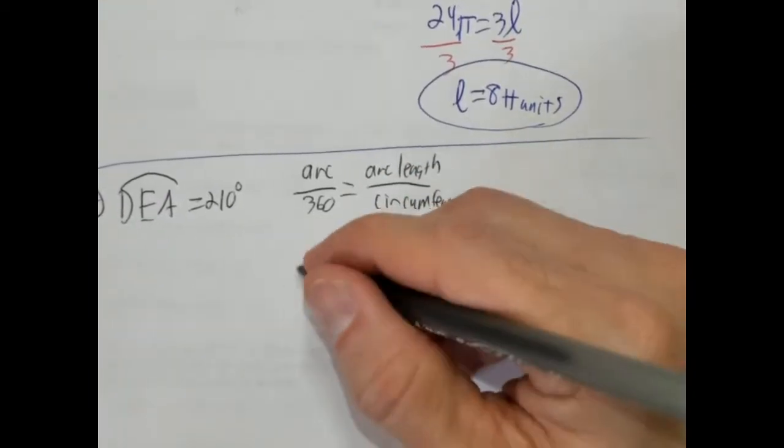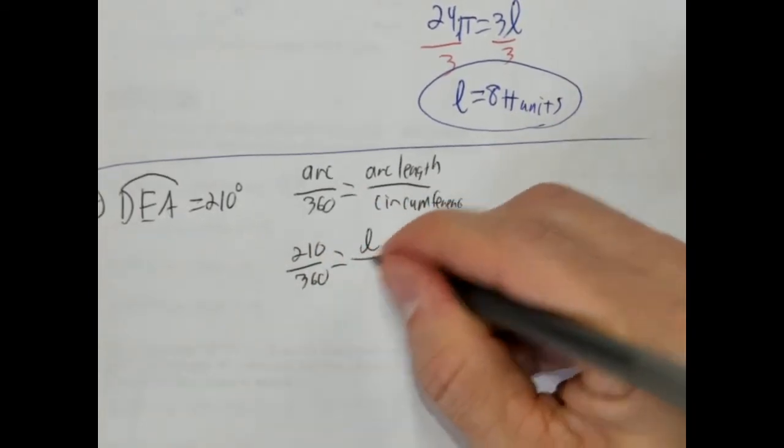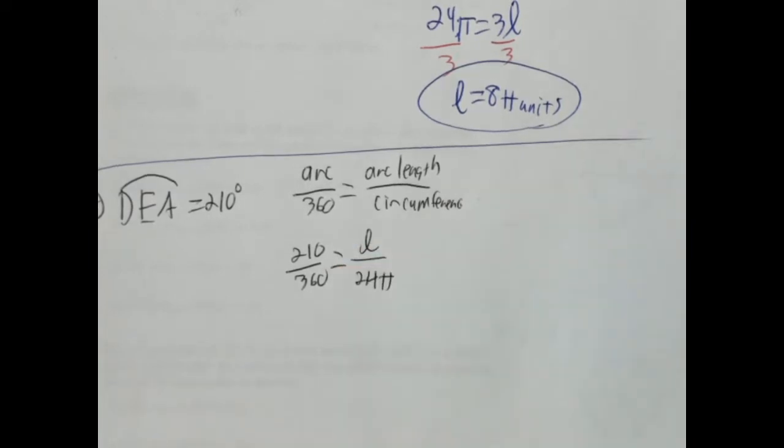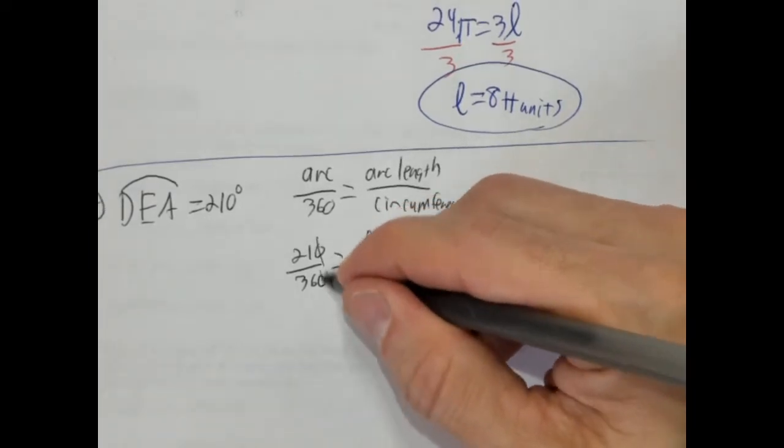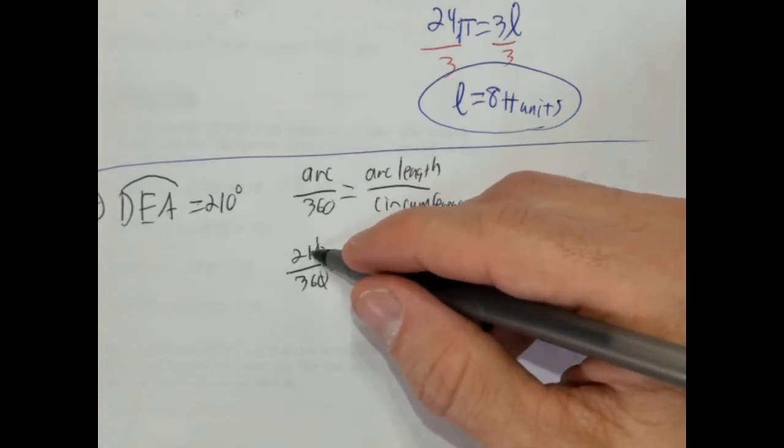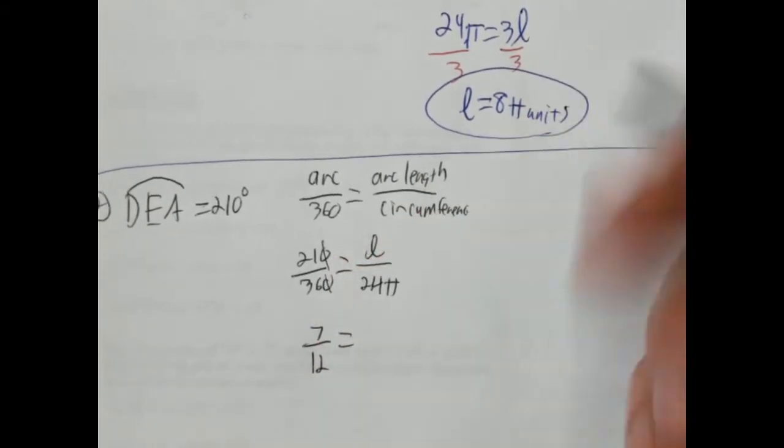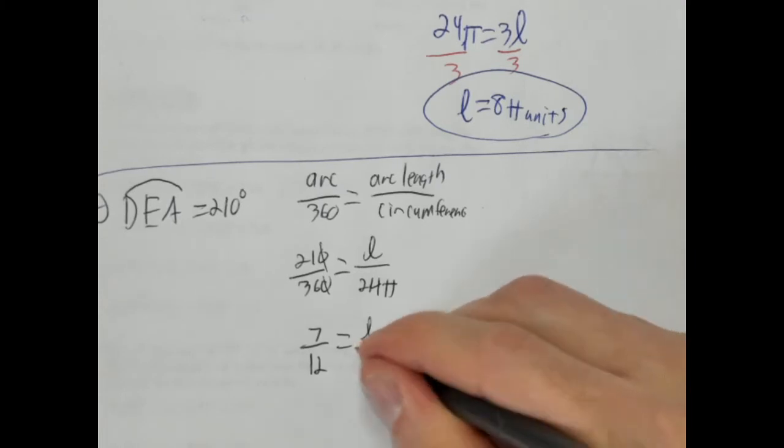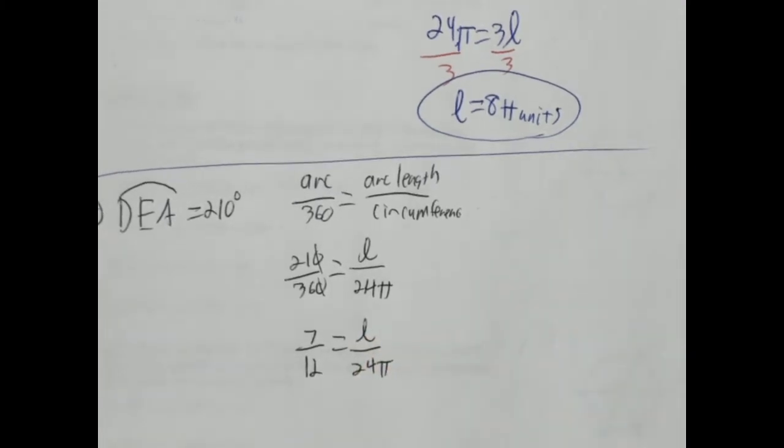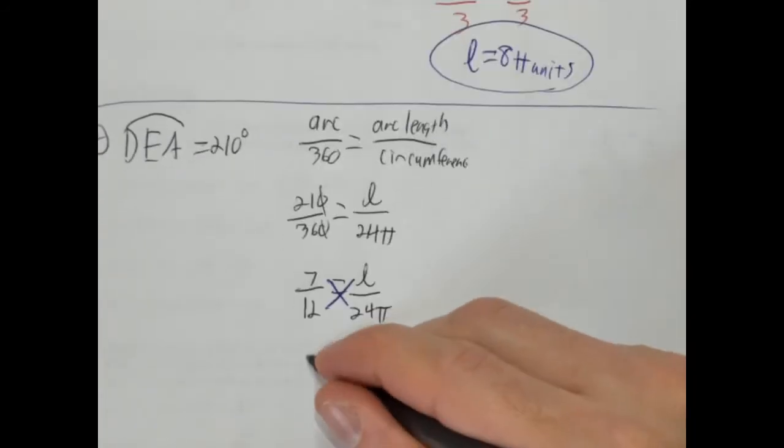So we know the circumference is going to be 24 pi the entire time. So let's plug these in. So the arc is 210 over 360 equals arc length, which we're not aware of, and 24 pi. Can we simplify that? Yes. We can both divide by 10, get rid of the zeros, then divide them both by 3. We're going to get 7 over 12. So 7 over 12. Or you could just cross multiply as it is and have gigantic numbers, but I don't like using gigantic numbers if I can avoid it. We're then going to cross multiply here.